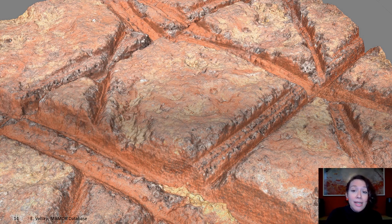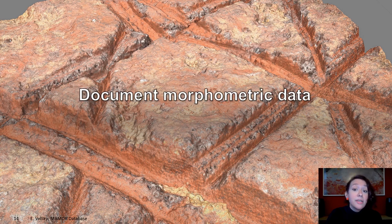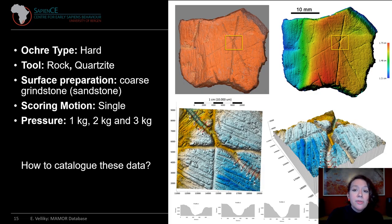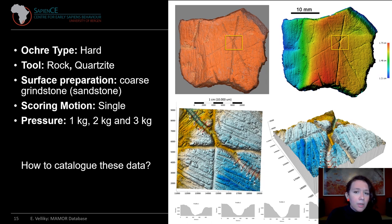We then have a workable 3D image as well as a digital elevation model, or DEM. On this DEM, we can take direct measurements on the use traces and document their morphometric data. So far, the data variables that we are recording include hardness, implement, surface preparation, scoring motion, and pressure. Half of this battle was trying to find a way to categorize this information accessibly, and we realized it was the actual incisions or lines themselves — because each line can be made by a different tool, with a different pressure, using different techniques, all on one ochre surface.